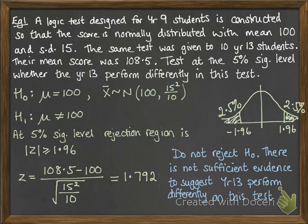This next example takes that same question, but instead of testing whether there was a difference on the test, we're going to change this slightly. We're going to test whether they perform better in this test. So instead of not equal to, our alternative hypothesis says that the mean will be greater than 100.